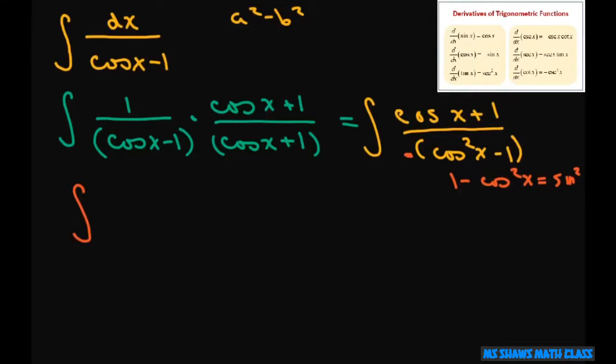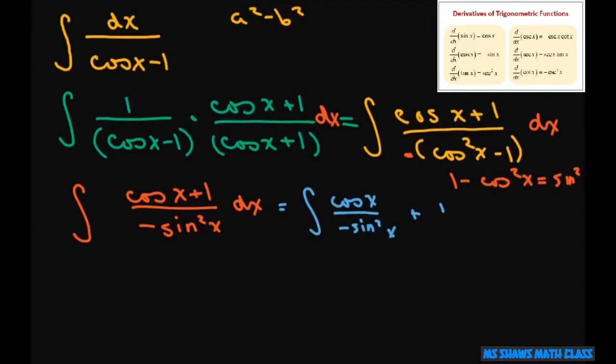So the way we're going to write this is cosine x plus 1 divided by negative sine squared x. So I'm going to break this up and put this sine squared under each piece. So that means what I really have is cosine x divided by negative sine squared x plus 1 – it's going to be minus here – divided by negative sine squared x.